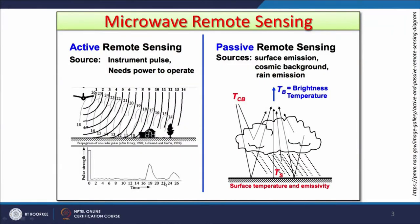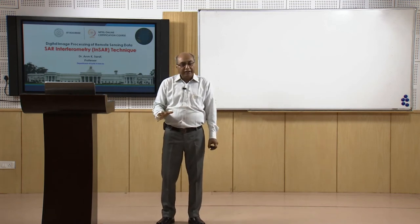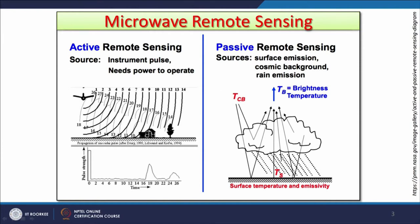The pulse is sent and whatever is backscattered is received, and line by line, pixel by pixel, the image is formed. The images we see in microwave are entirely different in construction from optical, near infrared, or thermal infrared images. In passive remote sensing, whatever emission is coming from the surface is recorded by the sensor.